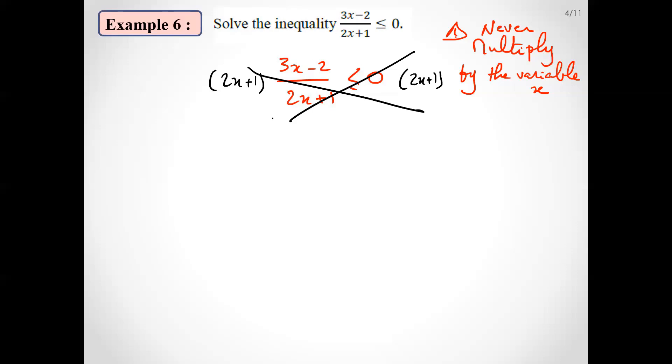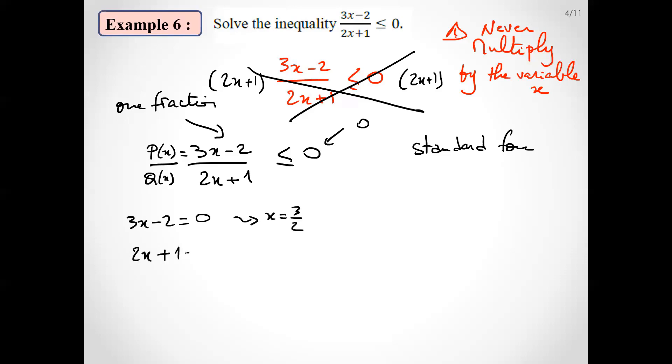Here it's in standard form since we have one single fraction in one side and zero on the other side. This is standard form. So we can work here directly. Just see when P(x) = 3x - 2 equals zero, x equals 2/3. And Q(x) = 2x + 1 equals zero means x equals minus half.